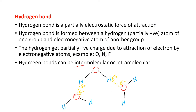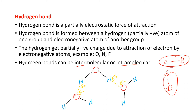Hydrogen bonds can be intramolecular or intermolecular. Intermolecular means between two molecules — this is one molecule and this is another molecule, and the force of attraction between them is intermolecular. Intramolecular means within the molecule there is a force of attraction. Inter means between; intra means within.